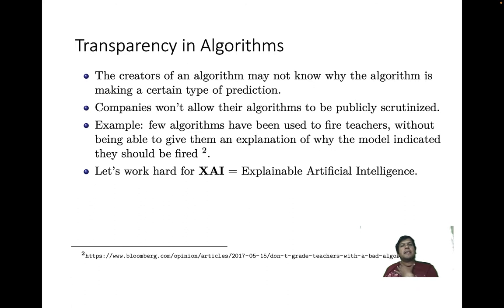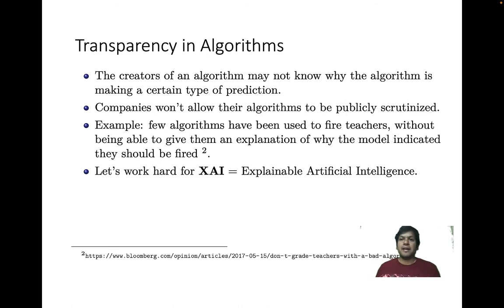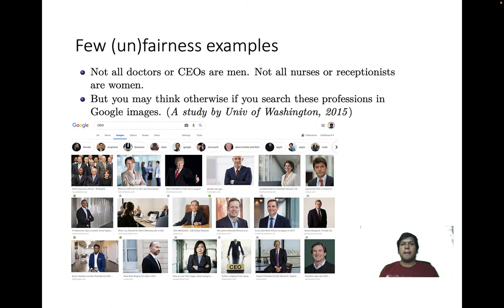Algorithm transparency is essential — we don't want machine learning to become a black box. It must have a way to explain why it predicted something as good or bad. There have been algorithms used to fire teachers at high schools without being able to provide an explanation for why the model indicated they should be fired, which created significant public scrutiny.